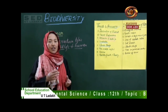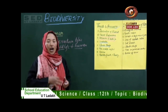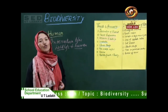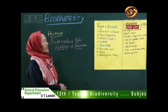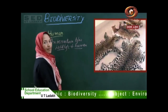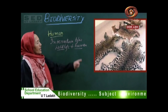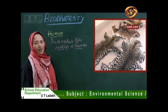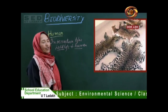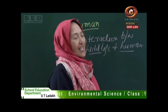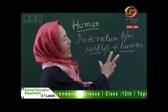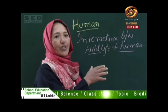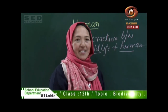Threatened and endangered species are killed by humans for so many purposes. This is a picture of an animal which was killed for their skin. Second, there are animals which were killed by humans for their ivory for medicine.